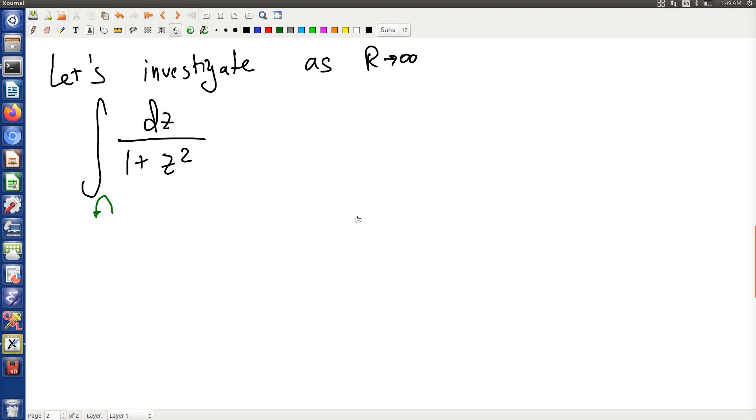Well, I know of no other way to deal with this integral, except by parameterizing it. So let's let z equals r, e to the i theta, for r constant, and theta between zero and pi.